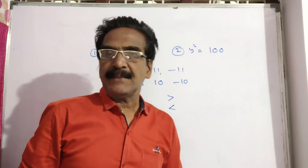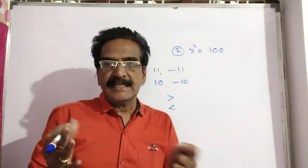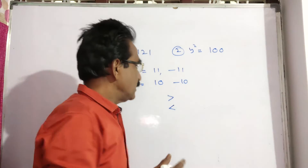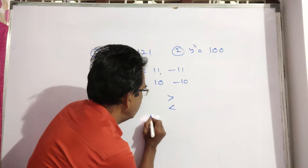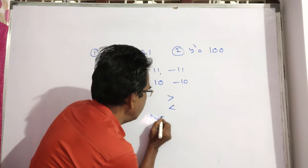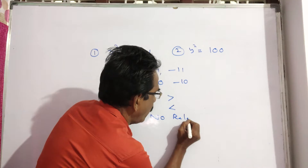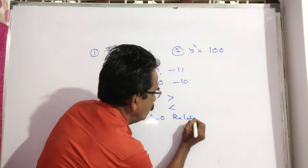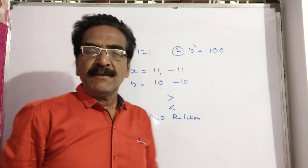So one time greater than, one time less than — it cannot be determined. Therefore, no relation is your answer. No relation is your option.